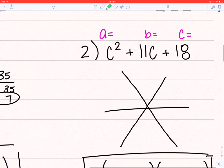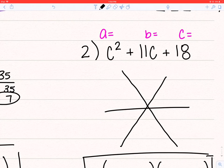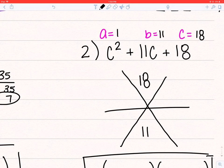Alright, so my next example, same thing. I'm going to do a equals 1, b equals 11, and c is 18. So I'm going to do a times c on top, which will be 18, b on the bottom, 11, 1c, 1c.